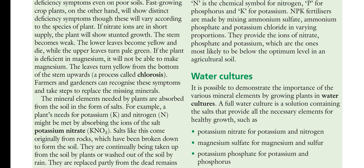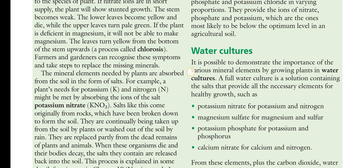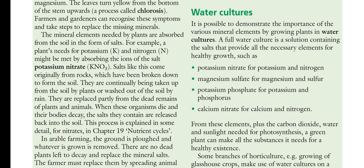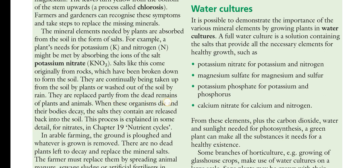Mineral elements needed by plants are absorbed from the soil in the form of salts. For example, a plant's need for potassium and nitrogen may be met by absorbing ions from potassium nitrate salts. These salts originally come from rocks that have been broken down to form soil. They are continuously taken up by plants or washed out by rain, and are partly replaced from the dead remains of plants and animals.